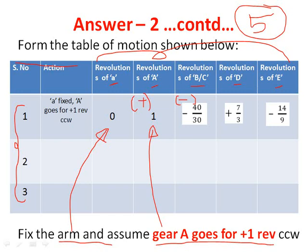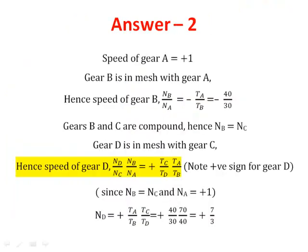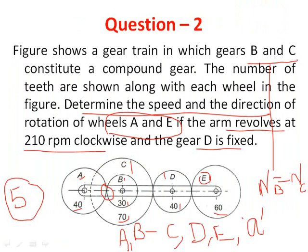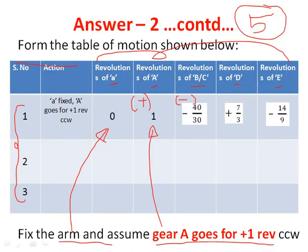For gear D: looking at the diagram, gear D is in direct mesh with gear C. Since C is negative, gear D will be positive. For gear E, which is in mesh with D: since D is positive, E will be negative. Keep the sign convention in mind throughout the table of motion, as using plus and minus correctly is very important for solving the problem correctly.